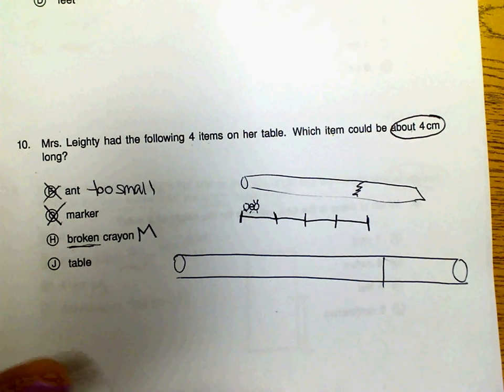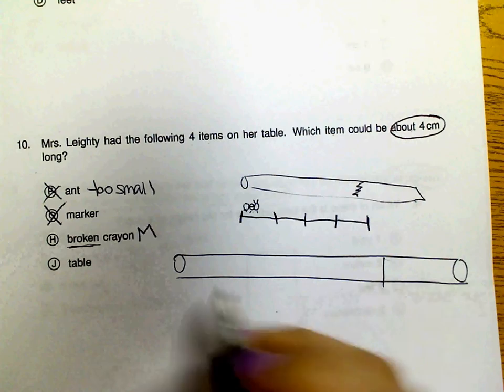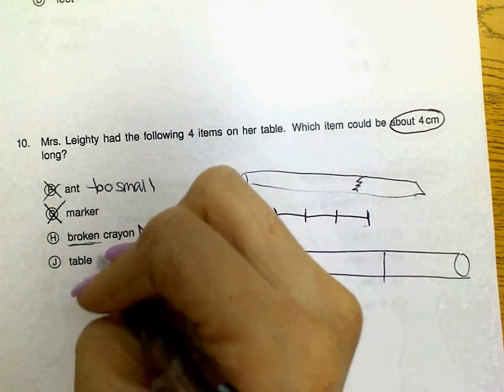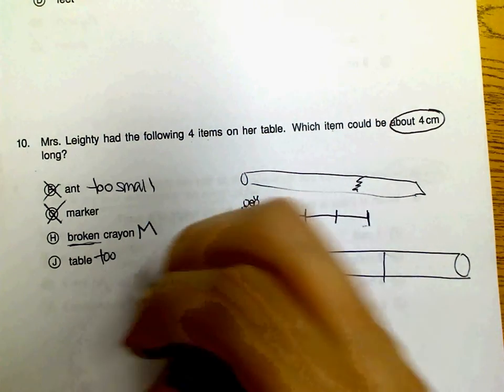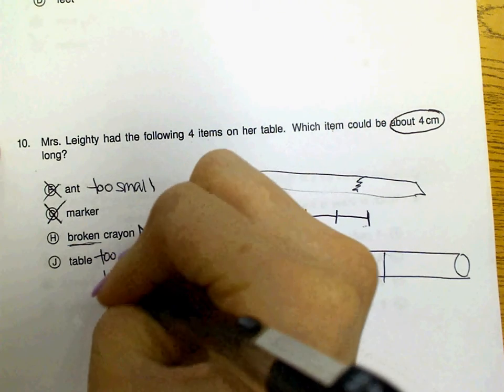Or a table. And if they're sitting at a table, they know that, wow, that is way too big. The table is probably going to be four meters, not centimeters.